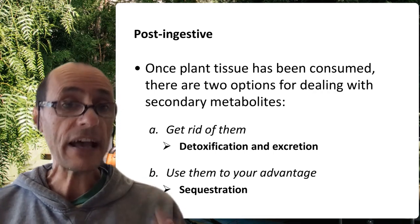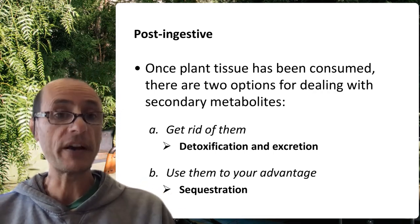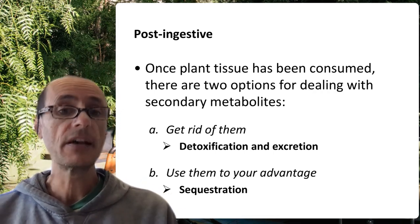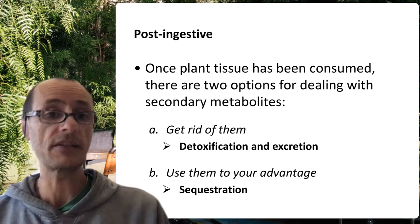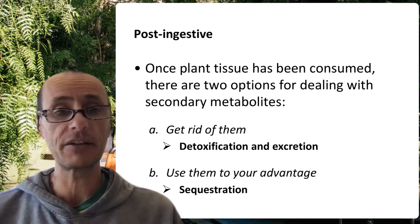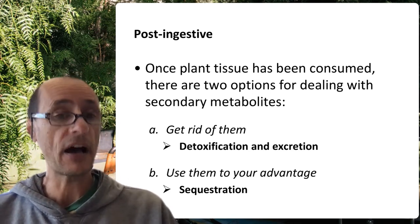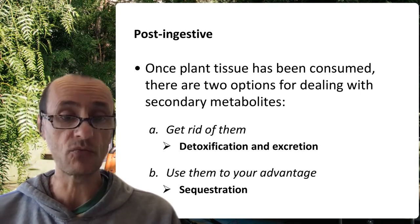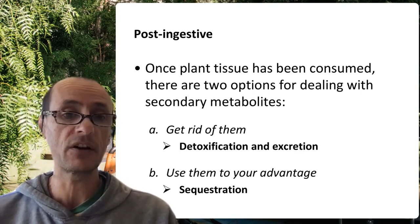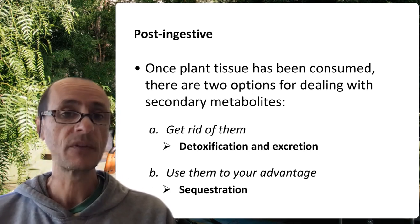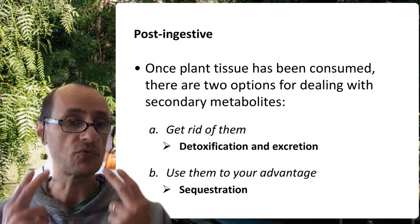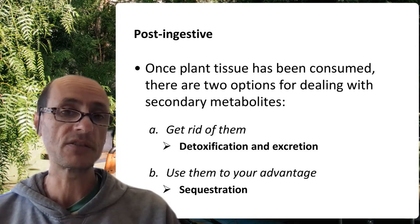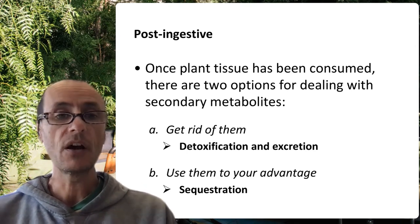All right, let's take a look at the last category of ways in which insects can protect themselves once these plant secondary compounds have actually reached their bodies. Once the tissue is consumed, there's really two different options of dealing with it.